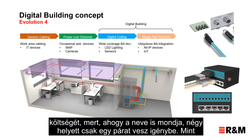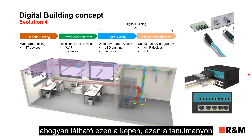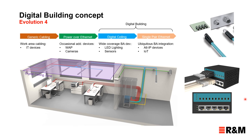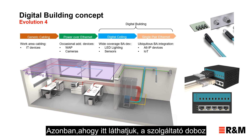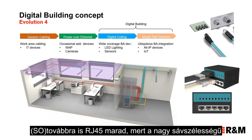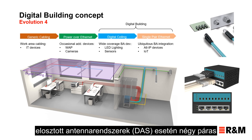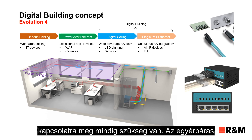As you can see in this study, roughly a doubling of port density is possible with single-pair Ethernet. However, the service outlet still remains an RJ45 because for high-bandwidth applications like wireless access points or distributed antenna systems, four-pair transmission is still needed.